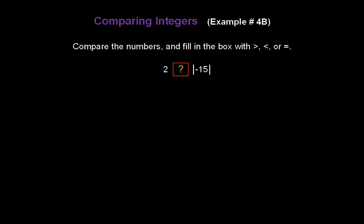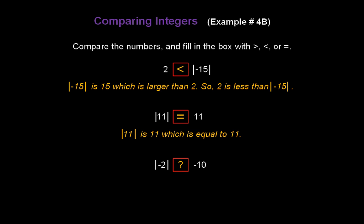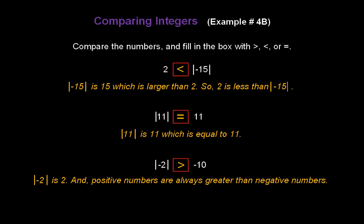How about 2 compared to the absolute value of negative 15? Did you get less than? The absolute value of negative 15 is 15, which is larger than 2, so 2 is less than the absolute value of negative 15. Let's try the absolute value of 11 compared to 11. Did you get equal? The absolute value of 11 is 11, which is equal to 11. And one more: the absolute value of negative 2 compared to negative 10. Did you get greater than? The absolute value of negative 2 is 2, and positive numbers are always greater than negative numbers.